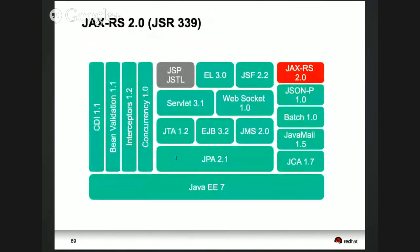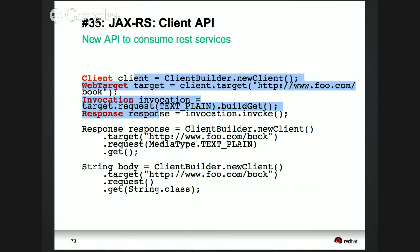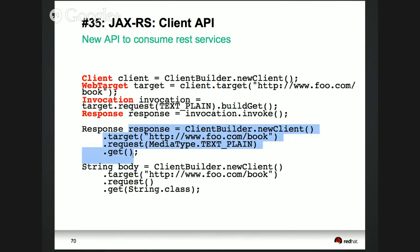JAX-RS 2.0 went from 1.1 to 2.0. JAX-RS 1.1 was always focused on server-centric APIs. Now JAX-RS 2.0 adds a client API. You can say ClientBuilder.newClient, set a target URI, build an invocation object with your media type, and invoke it to get a response back. Or using the fluent builder API: clientBuilder.newClient().target().request().get() all in one call — invoking any REST endpoint. You can also say just build a request and get the response back as a String.